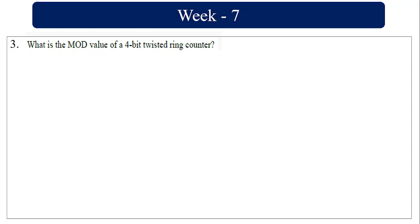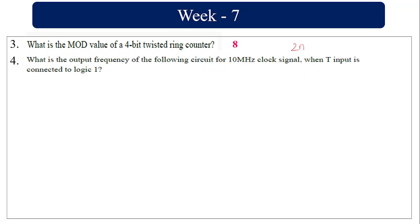What is the mod value of a 4-bit twisted ring counter? The formula is 2 into n. Here n is 4 bits, so 2 × 4 = 8.